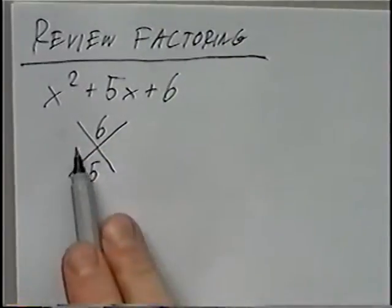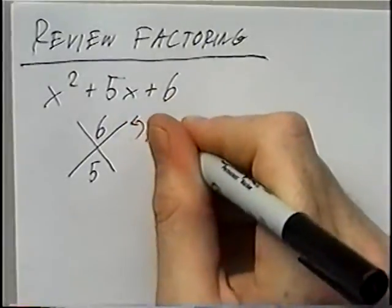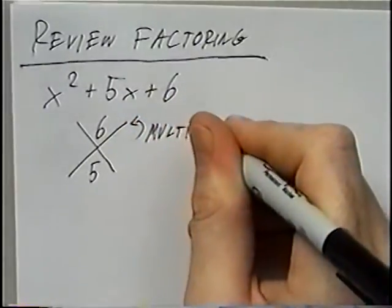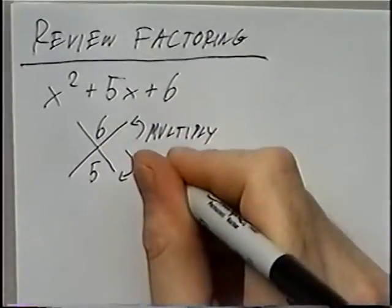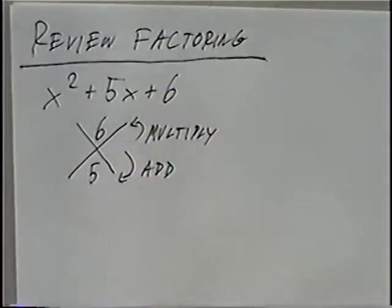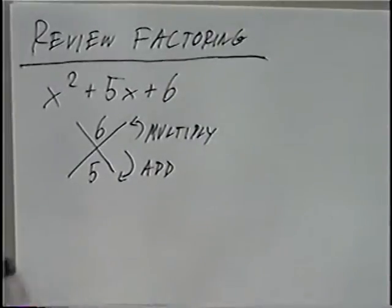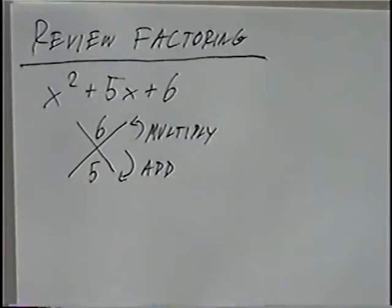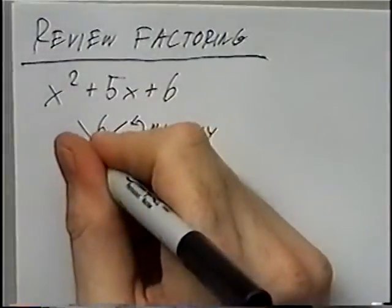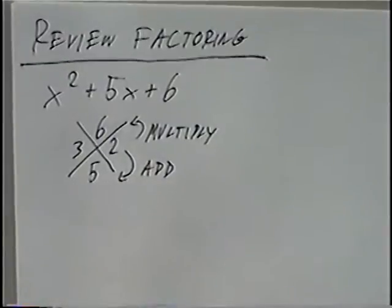To find our two numbers, those two numbers will multiply to get the top number, which is 6, and those same two numbers will add to get the bottom number, which is 5. So we're looking for two numbers that multiply to get 6 and add to get 5. Those numbers would be 3 and 2: 3 times 2 is 6, and 3 plus 2 is 5.